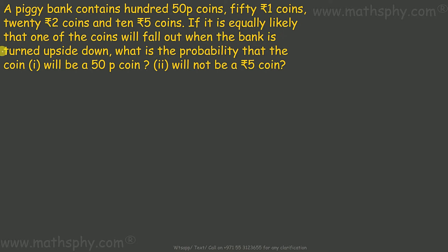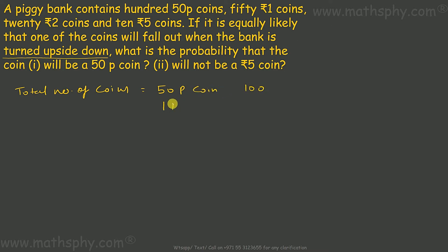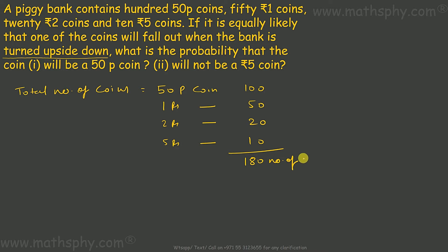It is equally likely that one of the coins falls out when the bank is turned upside down — meaning the chance of any one coin falling out is equally likely. Let's count the total number of coins: 50-paisa coins — 100, one-rupee coins — 50, two-rupee coins — 20, and five-rupee coins — 10. So I have a total of 180 coins.